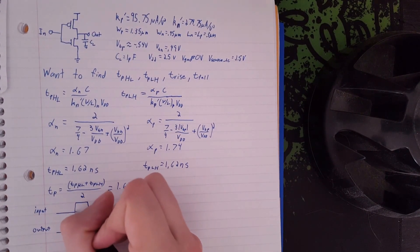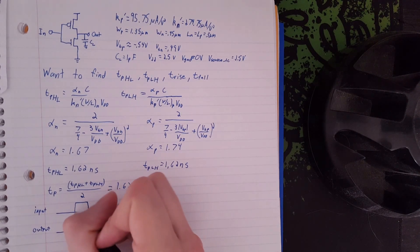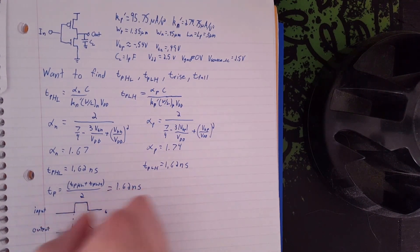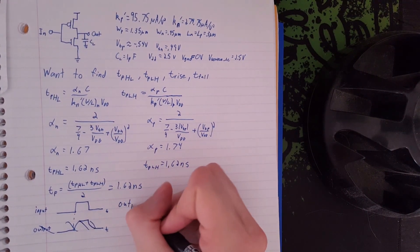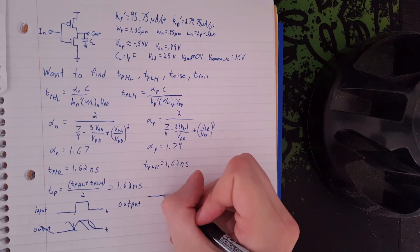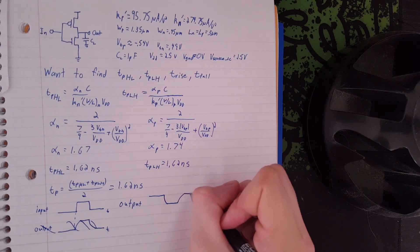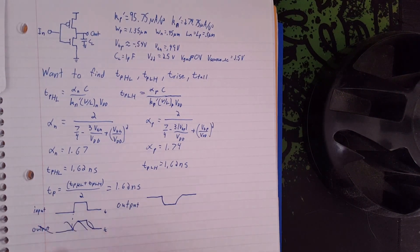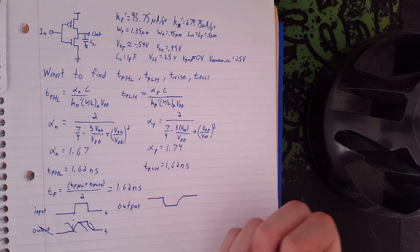So this time delay here is just the distance between the start, the trigger, and—oh, excuse me, this is an inverter. So your output would look like this.